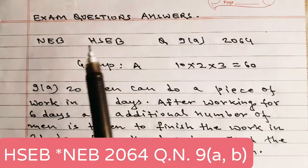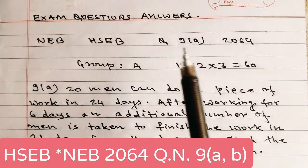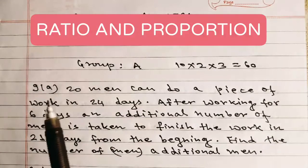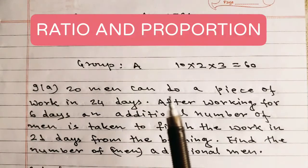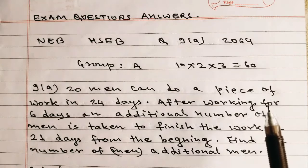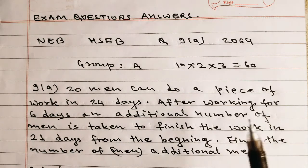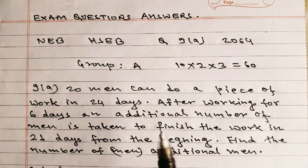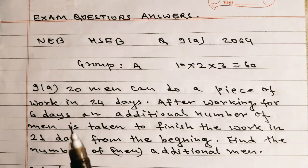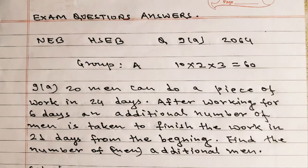Exam questions answers NEB HSEB 2064, question number 9a, group A. 20 men can do a piece of work in 24 days. After working for six days, an additional number of men is taken to finish the work in 21 days from the beginning. Find the number of additional men.